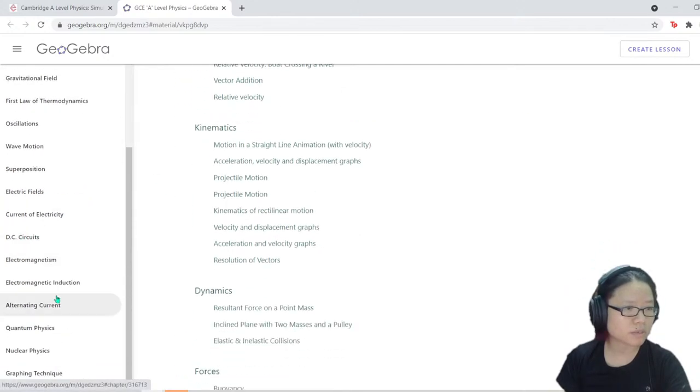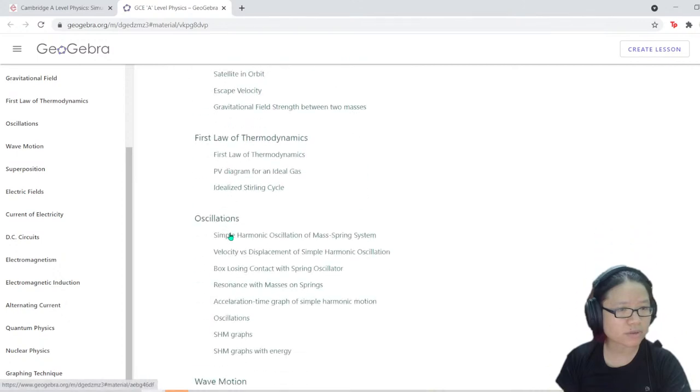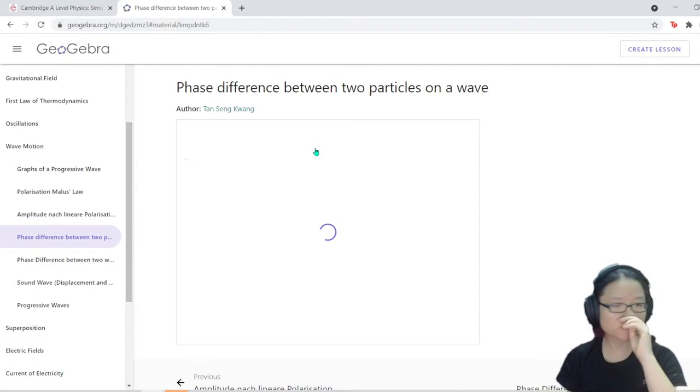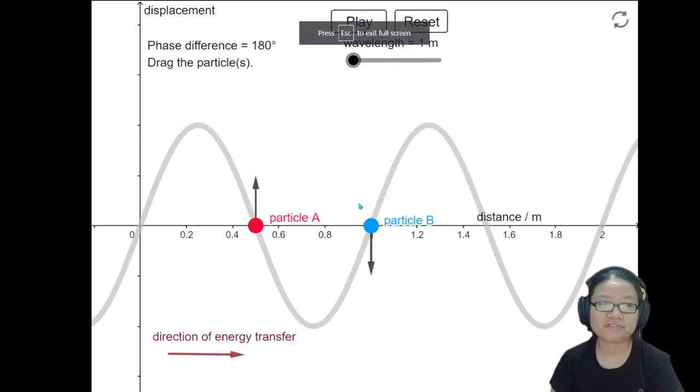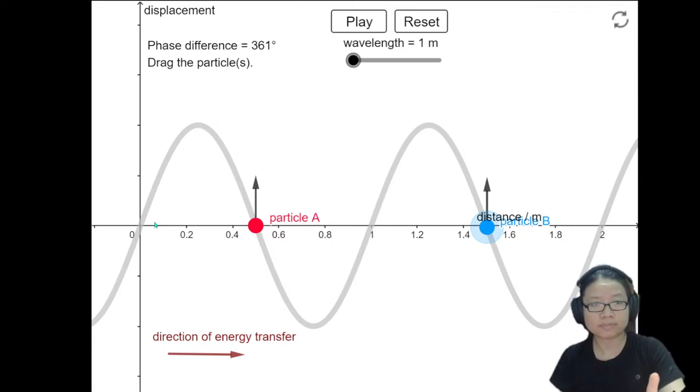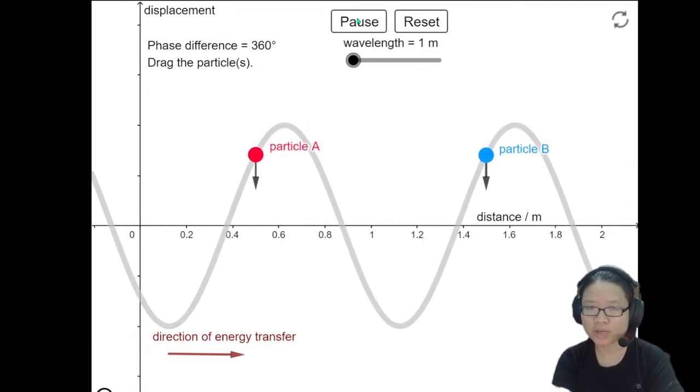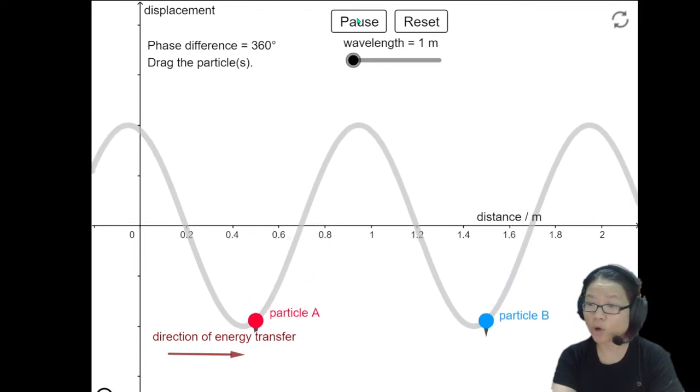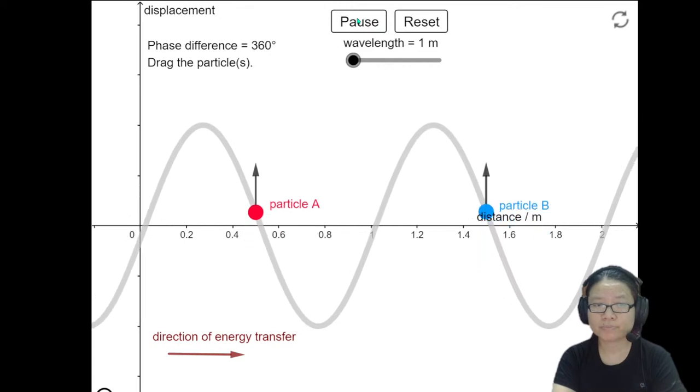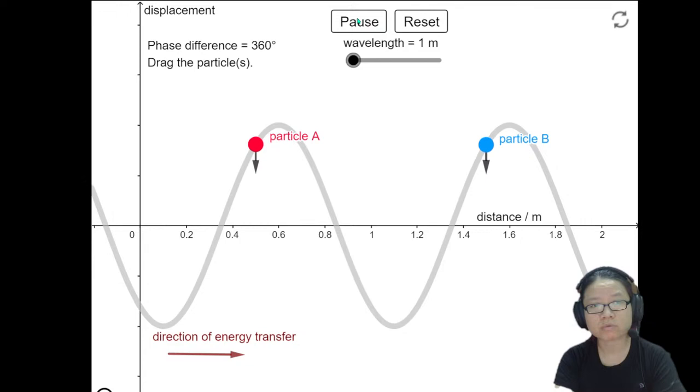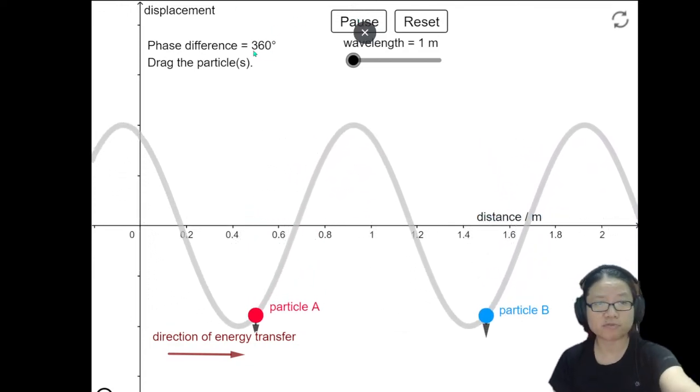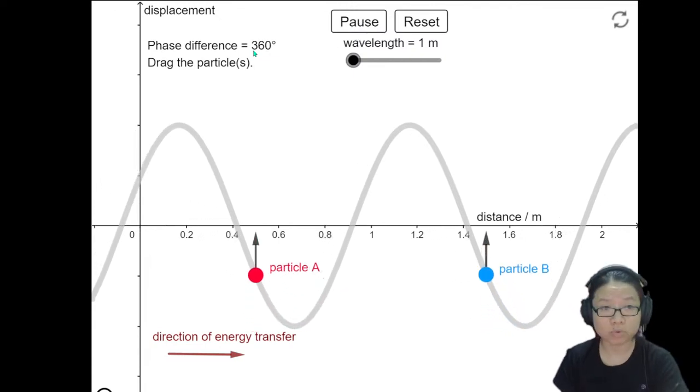If I want to look at phase difference between two points, I can click on this. If I want one lambda, my particle B has to be here. This is one lambda. Normally you will know that the repeated pattern is one lambda. If I adjust this, the phase difference is exactly 360 degrees. This is what in phase means - they move together all the time. They are BFF. When you're up, your best friend is also up. When you're down, your best friend also feels sorry for you - also down.